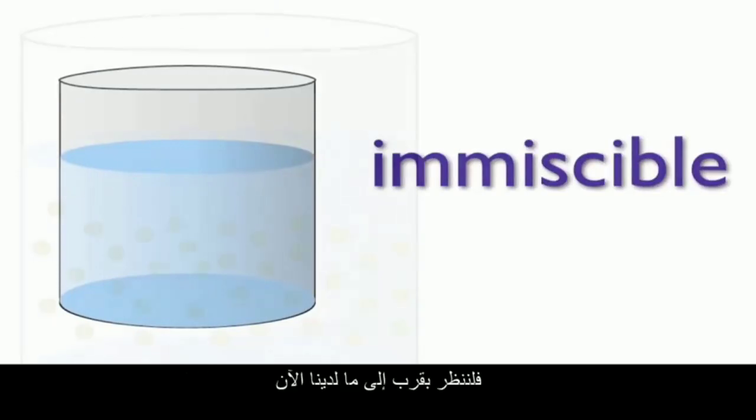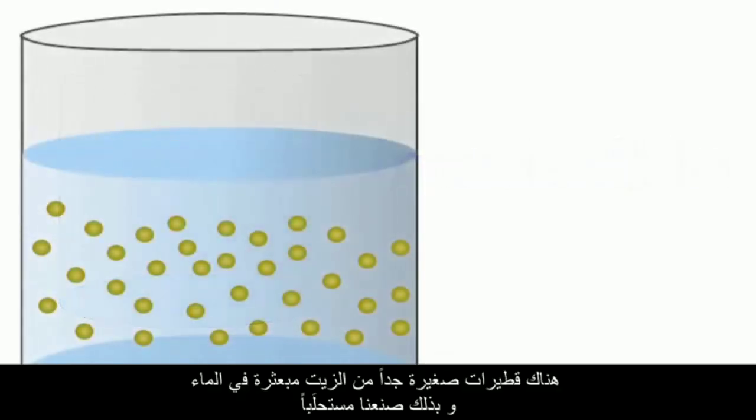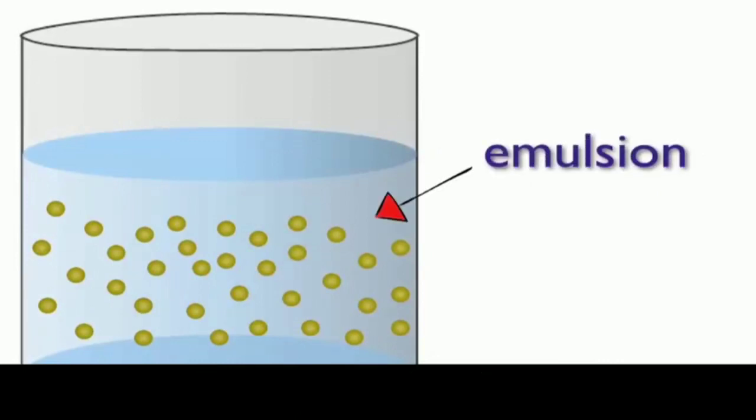Looking closely, we can see tiny oil droplets dispersed through the water. This is what we call an emulsion.